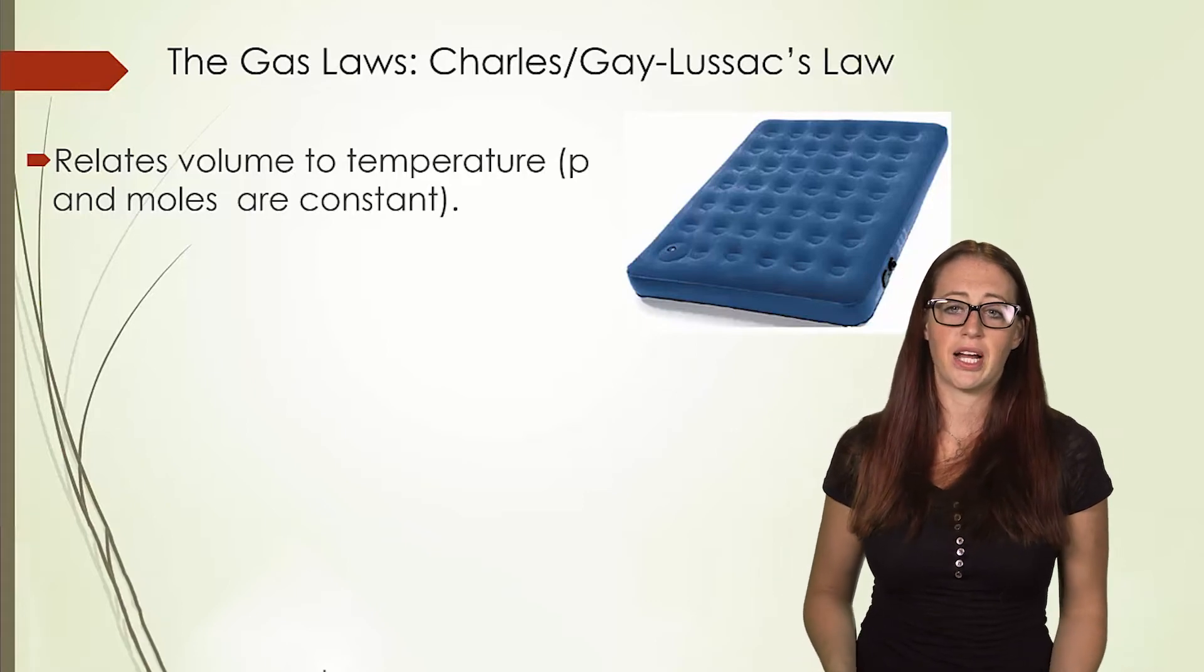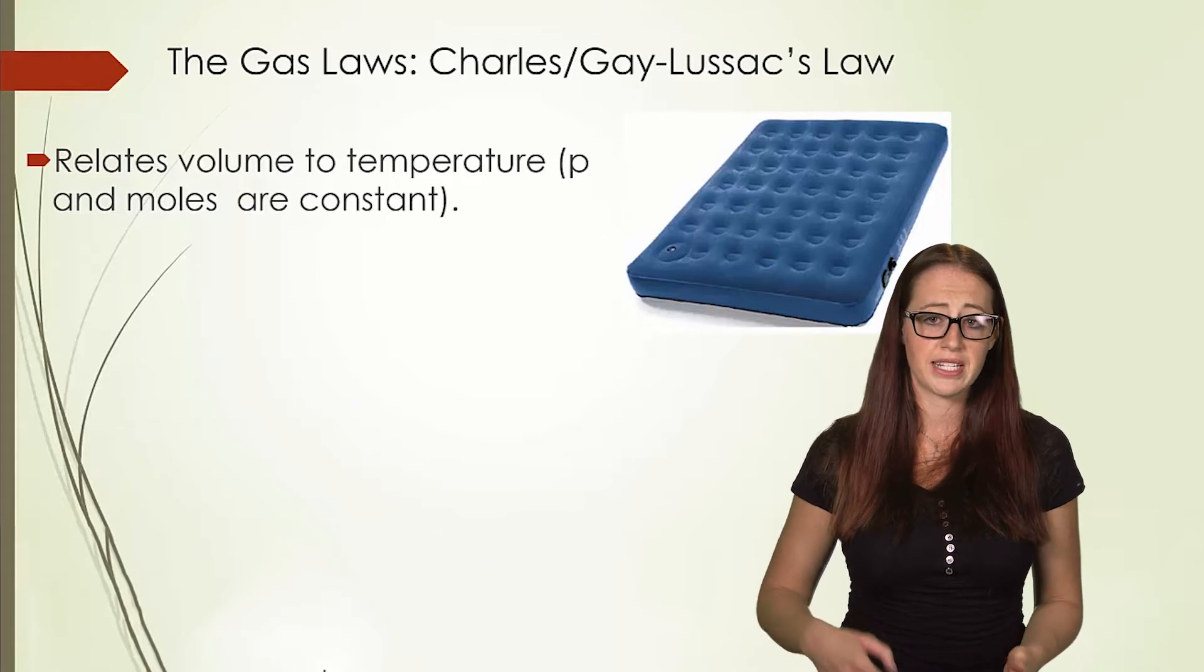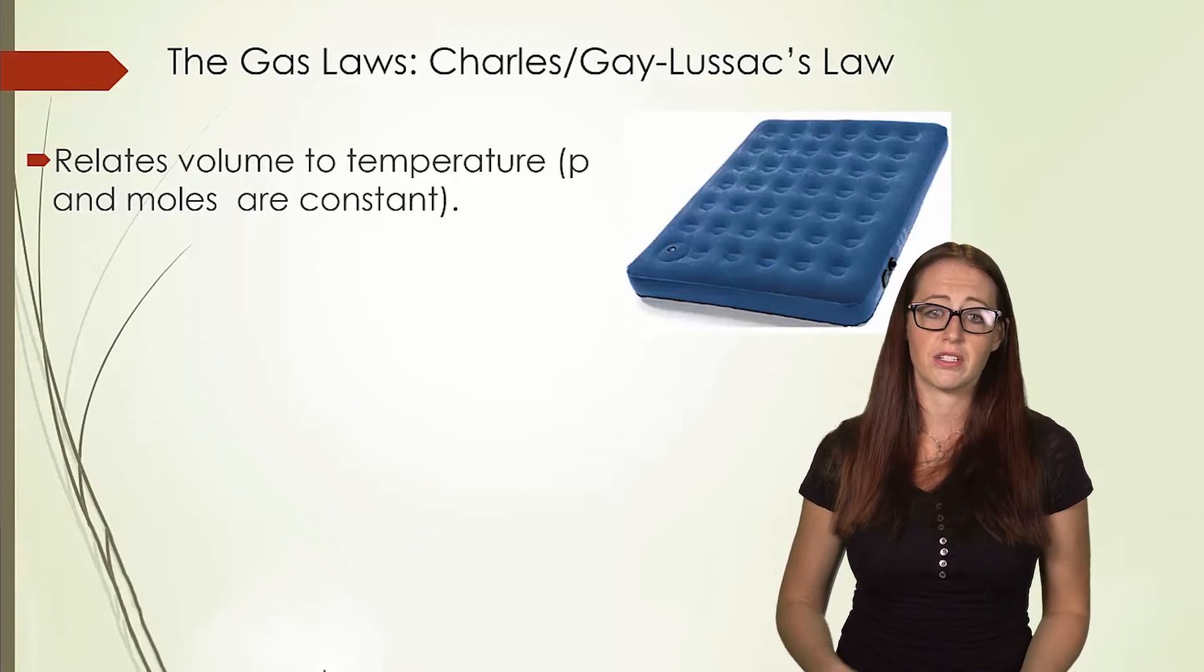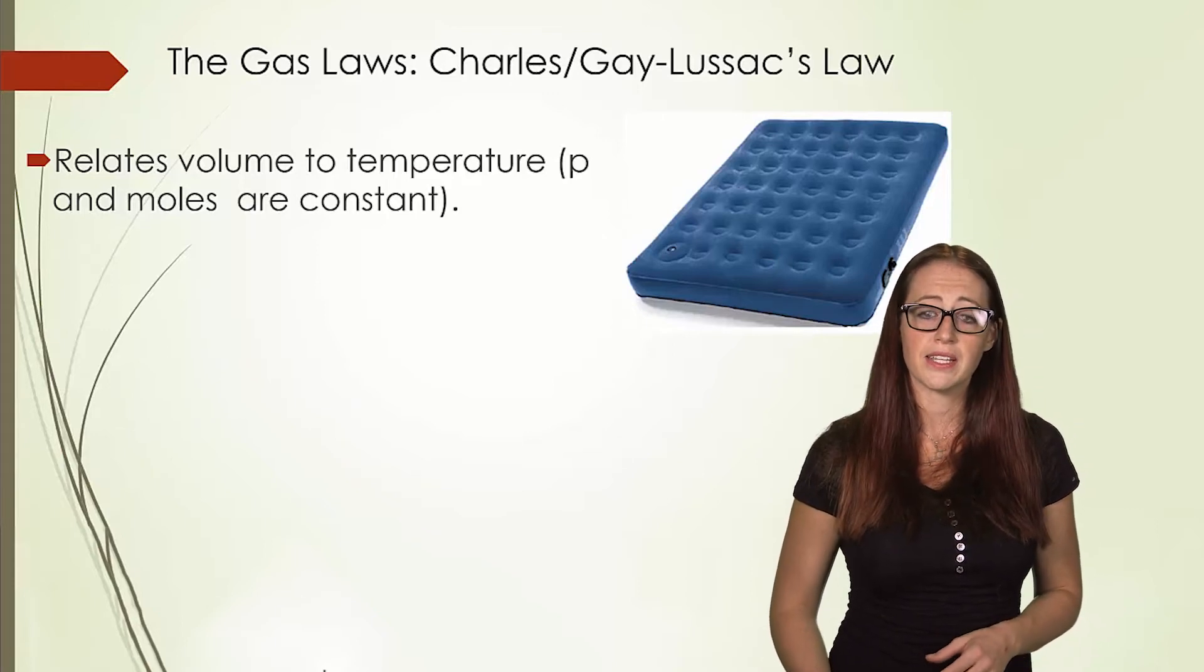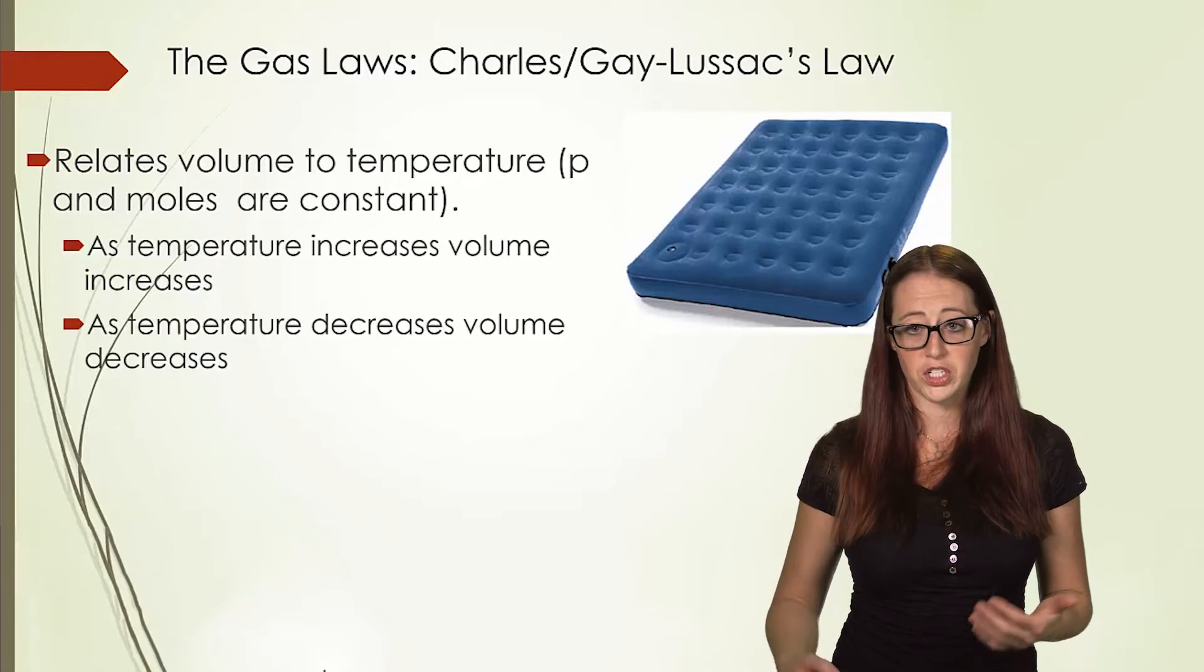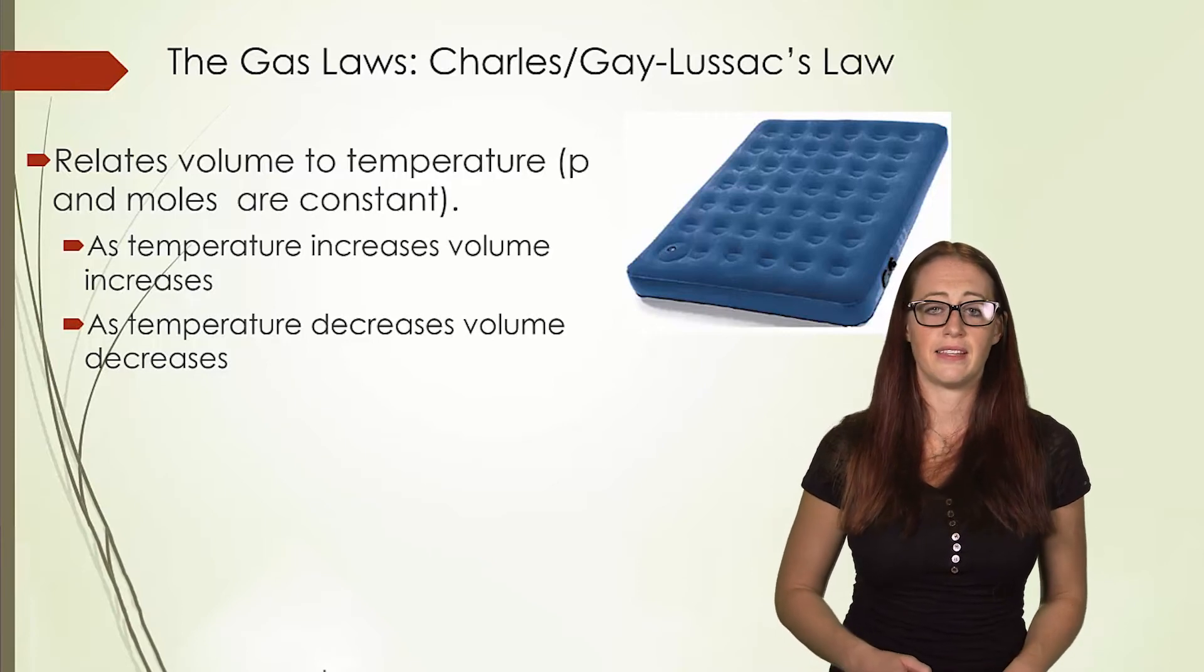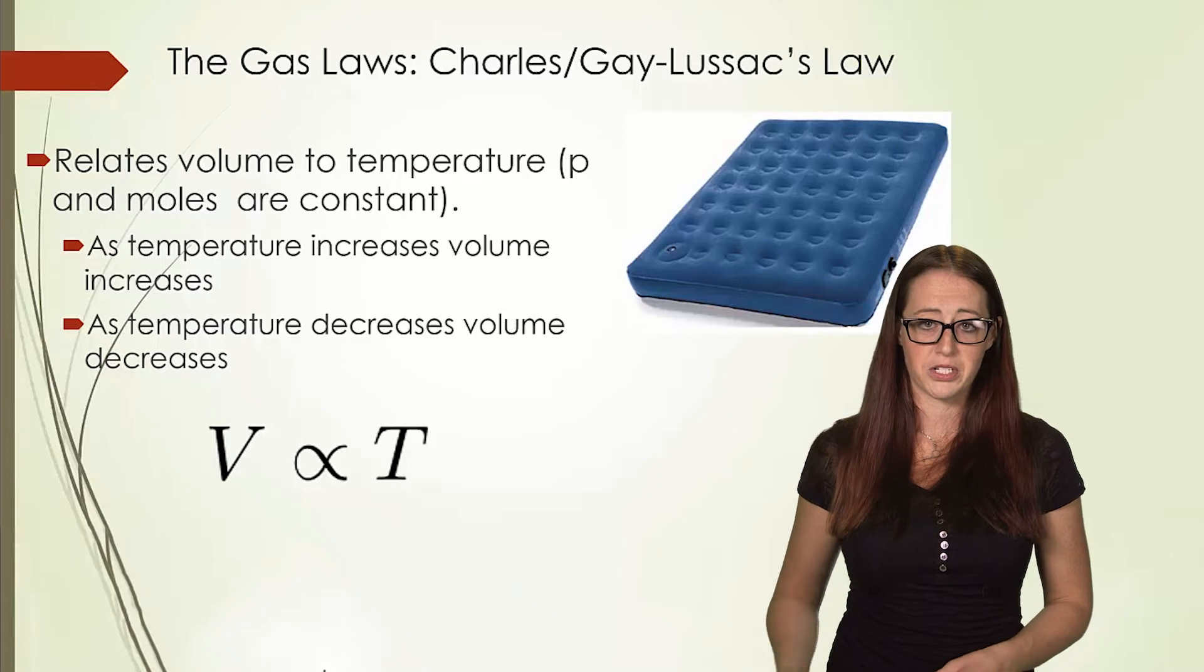An air mattress is a good approximation of a stable pressure system. As the temperature goes down after dark, the volume starts to fall. In other words, as temperature decreases, volume decreases. Or as temperature increases, volume increases. Mathematically, we say that this means that volume is proportional to temperature.